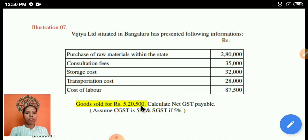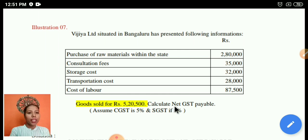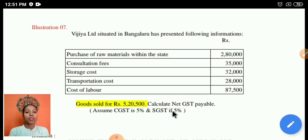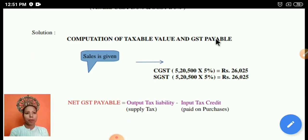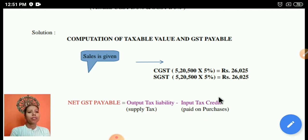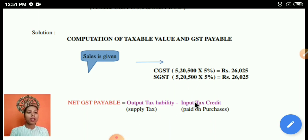GST is applicable on supply. The goods are sold for rupees 5,20,500, which is the output — that is, the supply. The problem asks for the net GST, which means output tax minus input tax credit. Assume CGST rate of 5% and SGST rate of 5%.